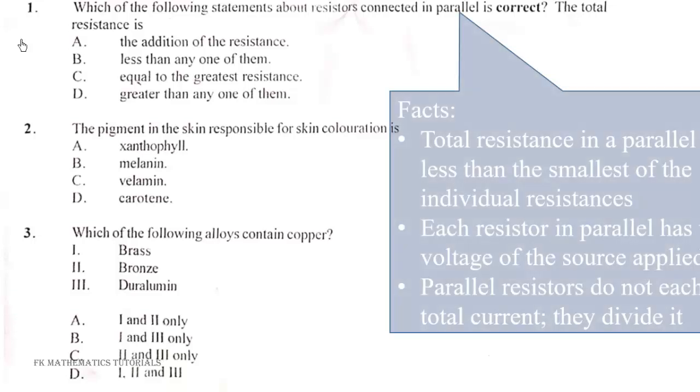Here are some facts you need to know about resistance connected in parallel. The total resistance in a parallel circuit is less than the smallest of the individual resistances. Each resistor in parallel has the same voltage of the source applied to it. Parallel resistors do not each get the total current, they rather divide it. So that tells us that the correct answer is B, because if it is less than the smallest, then the total resistance should be less than any one of them.